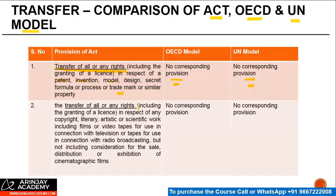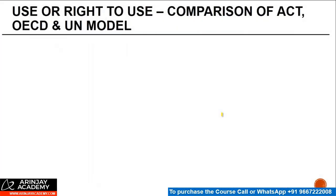The transfer of all or any rights, including granting of a license in respect of any copyright, literary, artistic or scientific work, including films or videotapes for use in connection with television, or tapes for use in connection with radio broadcasting, but not including the consideration for the sale, distribution or exhibition of cinematographic films — again, these provisions are missing in both the OECD and the UN model.